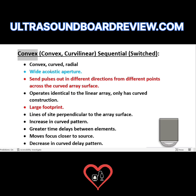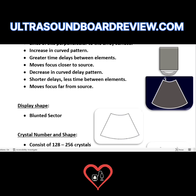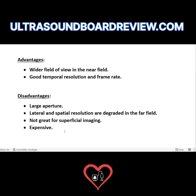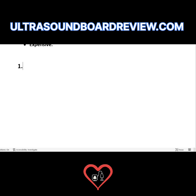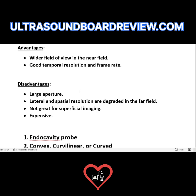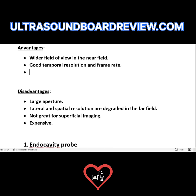Regarding convex transducers, your exam may not distinguish between sequential/switched and phased convex transducers. Regardless of type, convex transducers have a wide acoustic aperture and a blunted or arced sector top. Advantages include a wider field of view in the near field and good temporal resolution and frame rate. The widest near field ranking is: endocavity probe first, convex/curvilinear/curved second, and vector third. Disadvantages include a large aperture, degraded lateral and spatial resolution in the far field, not great for superficial imaging, and they are expensive. They are ideal for abdominal imaging.